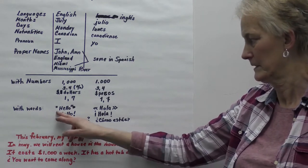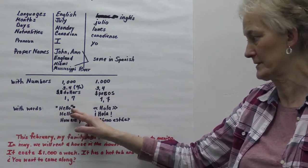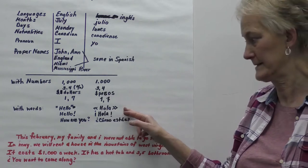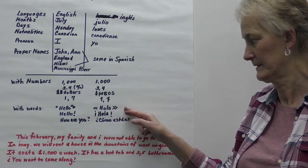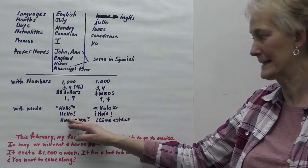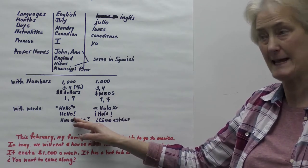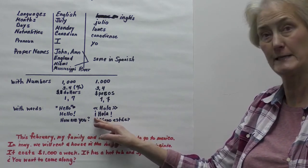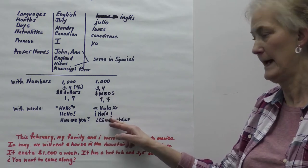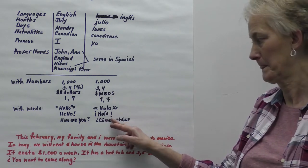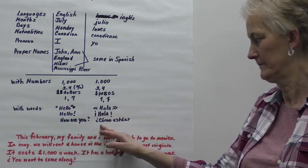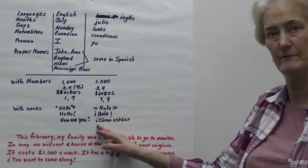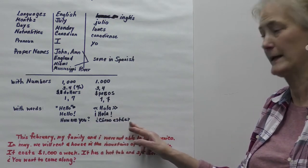With words, in English we use these as quotation marks. In Spanish, they use different markings. 'Hello!' — exclamation point at the end. In Spanish, you have an inverted one at the beginning and one at the end. 'How are you?' uses a question mark. 'Como estás?' — same idea: you have an inverted question mark at the start and a regular question mark at the end.